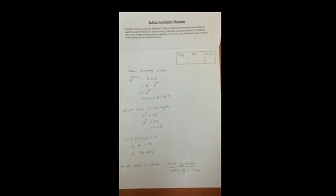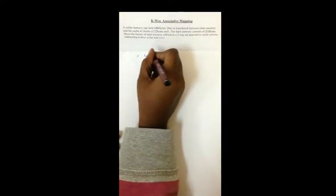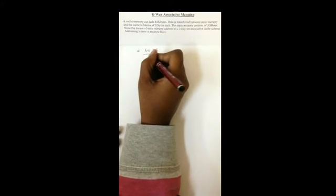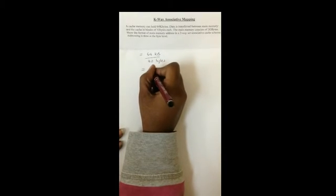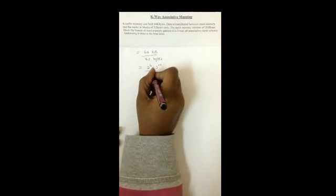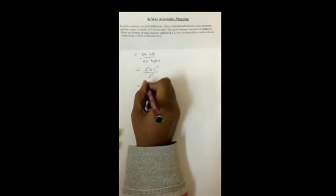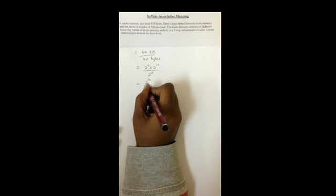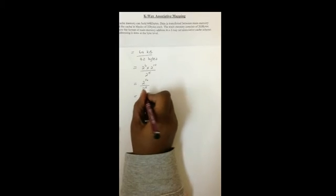The number of lines in cache is equal to the size of cache divided by the size of a line. So we get 64 kilobytes divided by 32 bytes. Our numerator becomes 2 to the 6 times 2 to the 10, and our denominator becomes 2 to the 5. We add our numerator indices, giving us 2 to the 16 divided by the denominator 2 to the 5. Subtracting those indices, we get 2 to the 11.